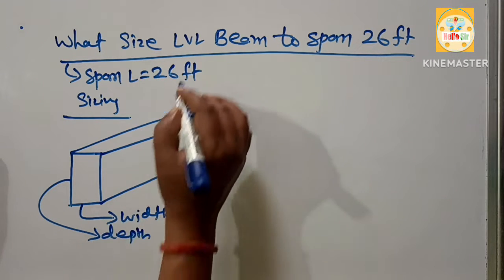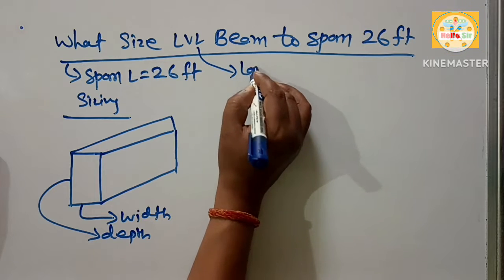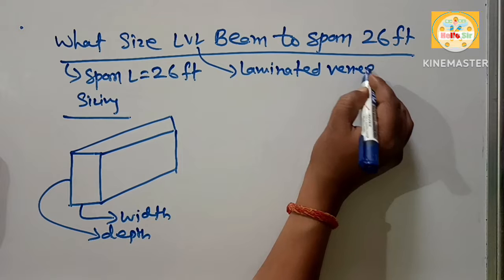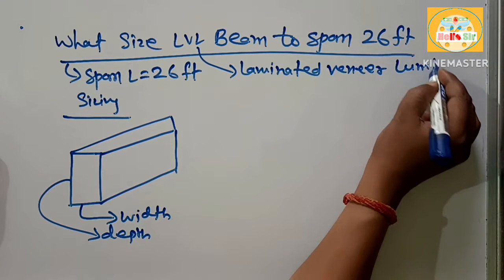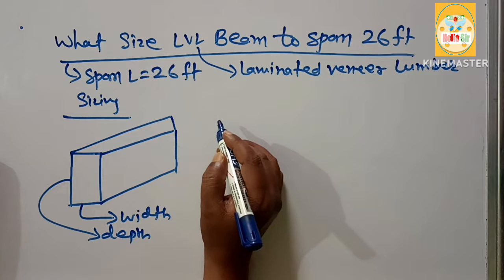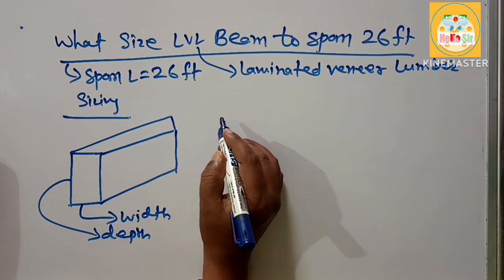You know that the LVL beam is laminated veneer lumber, made from assembly of thin sheets of wood with adhesive.